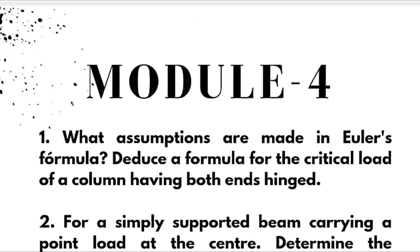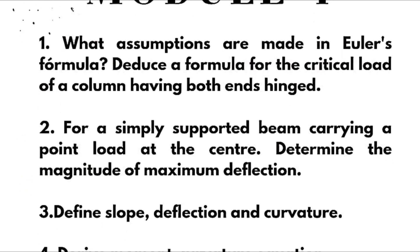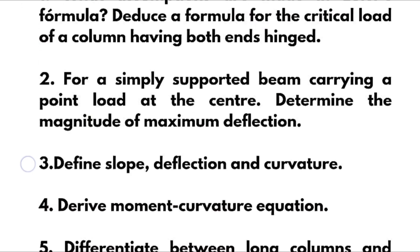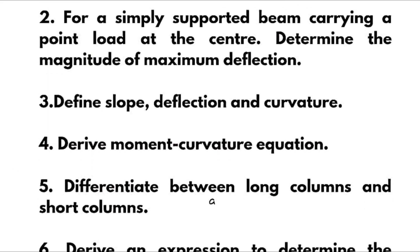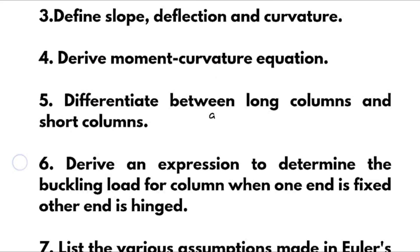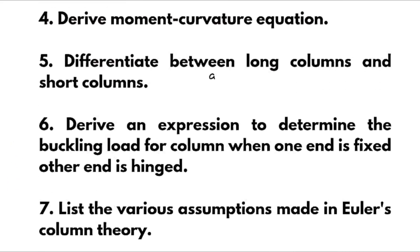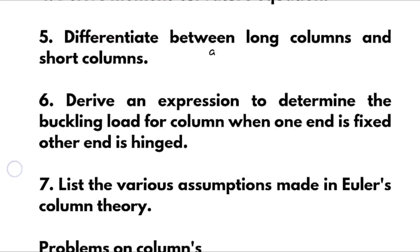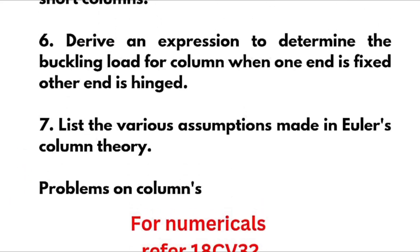For Module 4: what assumptions are made in Euler's formula? Deduce a formula for the critical load of a column having both ends hinged. For a simply supported beam carrying a point load at the center, determine the magnitude of maximum deflection. Define slope, deflection, and curvature, and derive the moment-curvature equation. Differentiate between long columns and short columns. Derive an expression to determine the buckling load for a column when one end is fixed and the other end is hinged. List the various assumptions made in Euler's column theory. Column problems are simpler ones — refer to previous year papers for the numerical part.